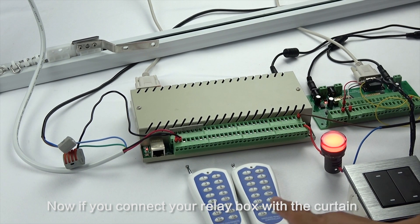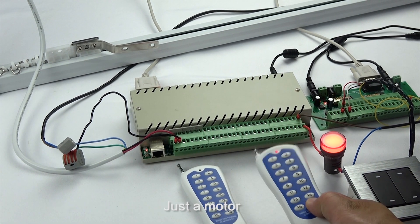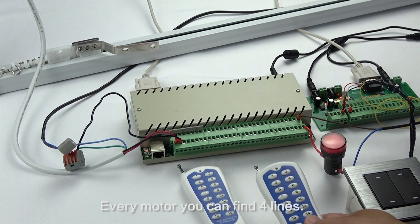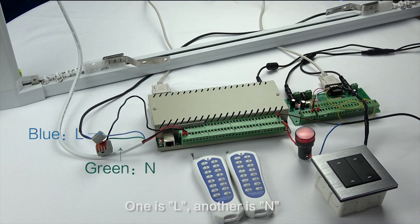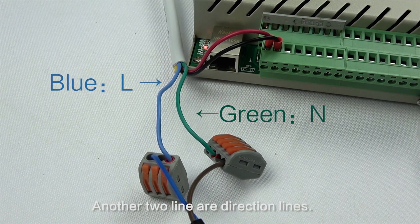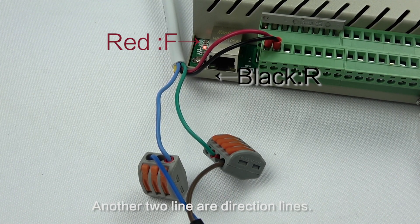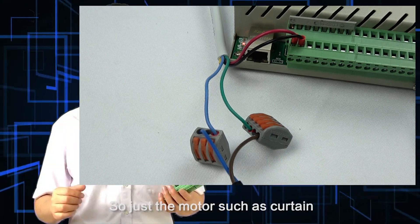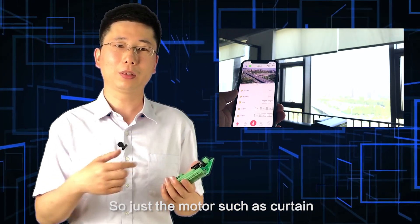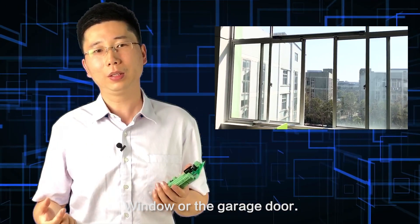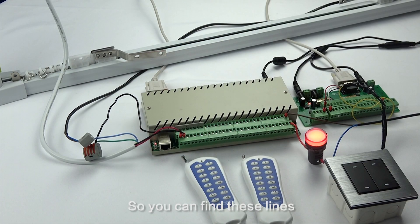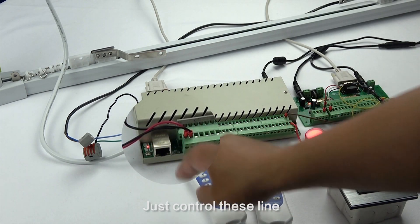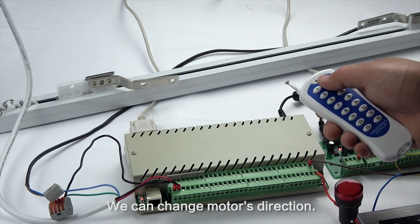Now, if you connect the relay box with your curtain motor, every motor has four lines: one is L, another is N, and the other two are direction lines. For motors such as curtains, windows, or garage doors, you can find these lines and control them to change the motor direction.